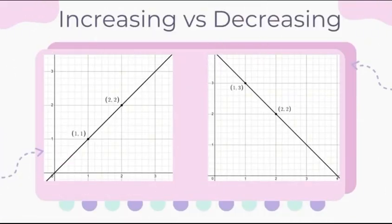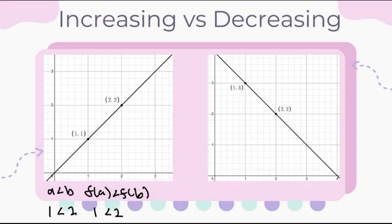First, one of the ways to describe a function is increasing and decreasing. This first graph shows an increasing function, because a is less than b, and f(a) is less than f(b). A equals 1, and f(a) is 1, and f(b) is 2. Therefore, that function is increasing.